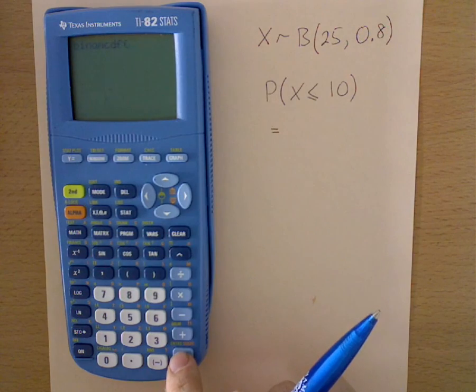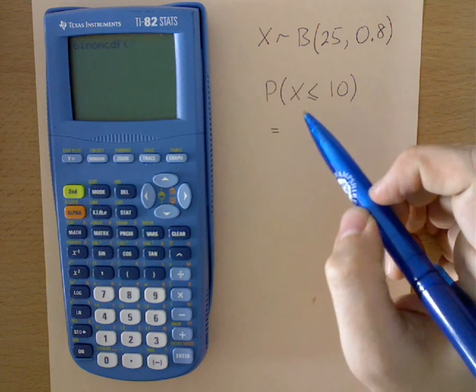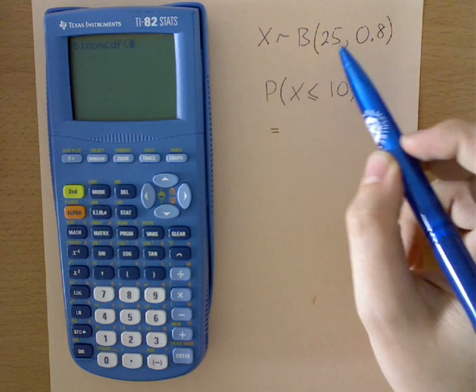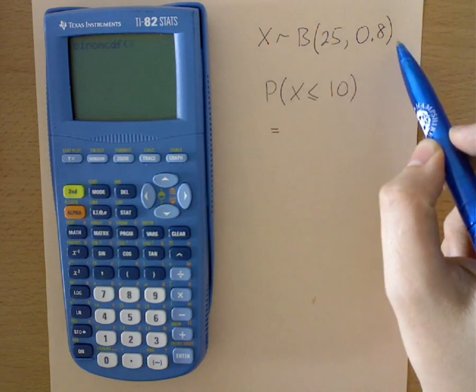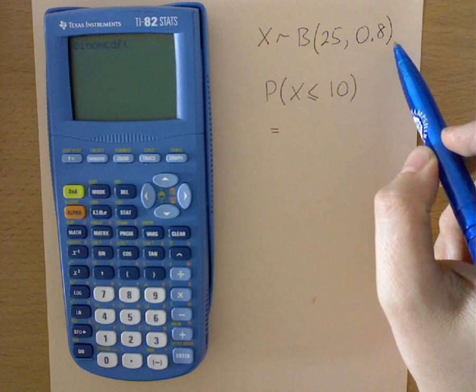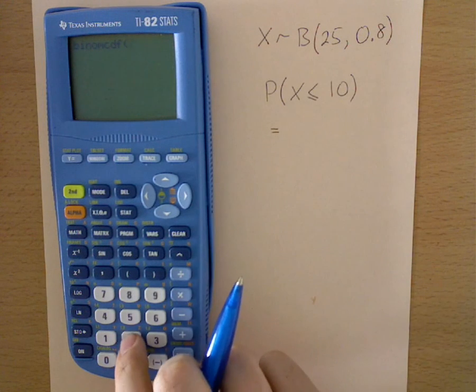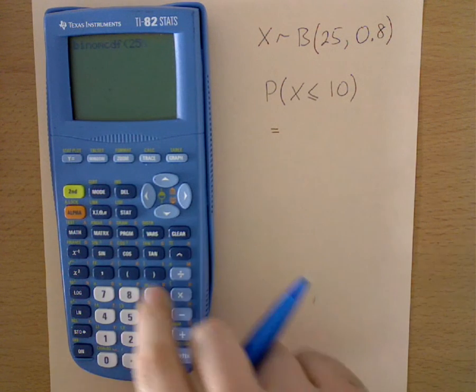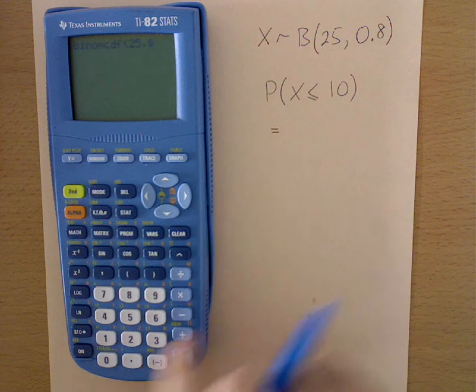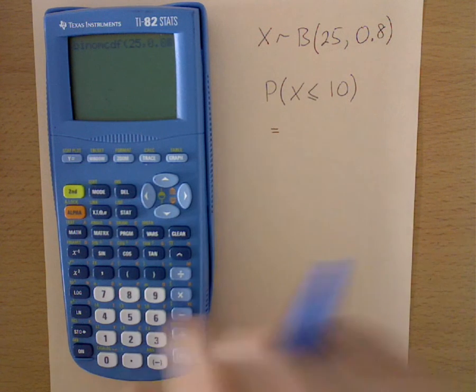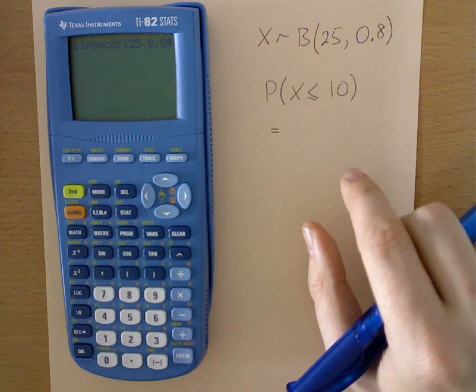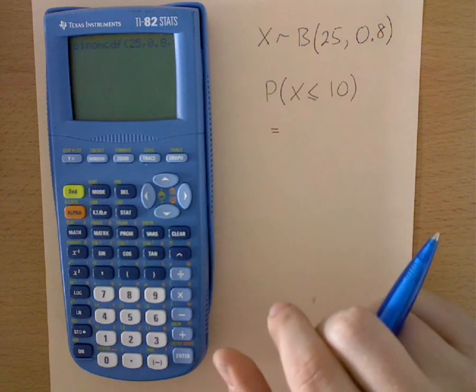Press enter, and then what you do is you fill it in much like the binomial information is set out. So you first put in the number of trials, 25, then you put in a comma, then you put in the probability of success, 0.8, then another comma.